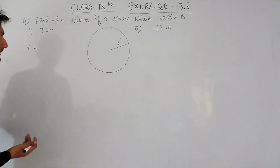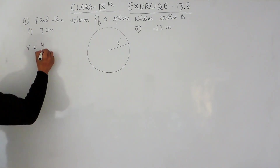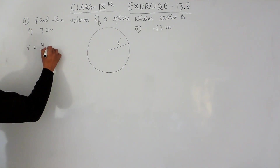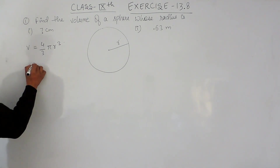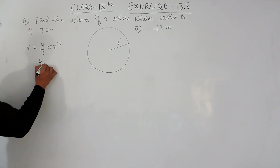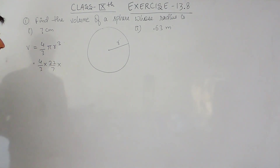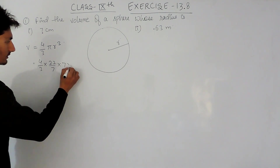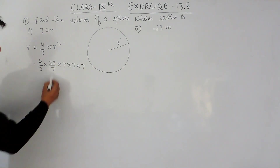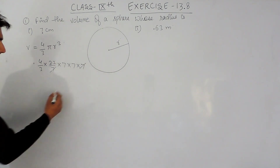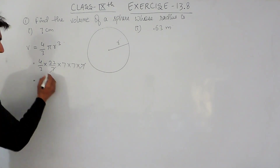The volume of a sphere is 4/3 π r³. So here, 4/3, the value of π is 22/7, and the radius is 7. So it should be 7 multiplied by 7 multiplied by 7. Now this 7 in the numerator can be cancelled with the 7 in the denominator, leaving 49, and it will be 88.